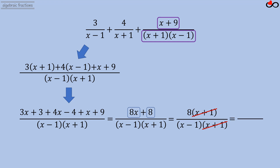Finally, we rewrite the remaining expressions in the numerator and denominator to get 8 divided by (x minus 1).